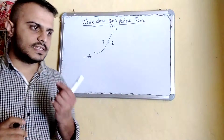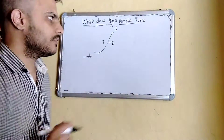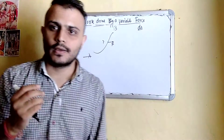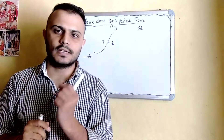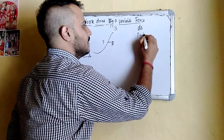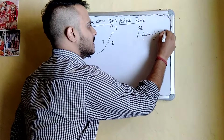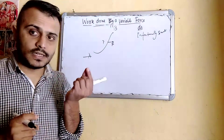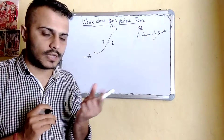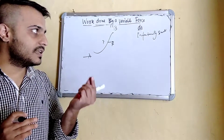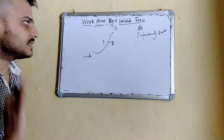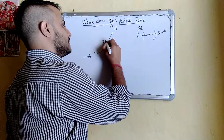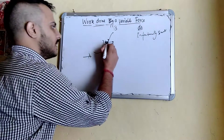We consider a very small displacement ds at point P. Even though the force is changing along the path, for this infinitesimally small displacement, we can suppose that the force is constant. This displacement is so small that we assume the force remains constant and equal to capital F. The small displacement ds is in a certain direction making an angle theta with the force.